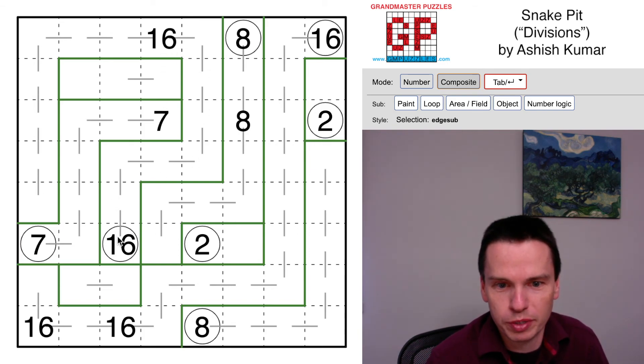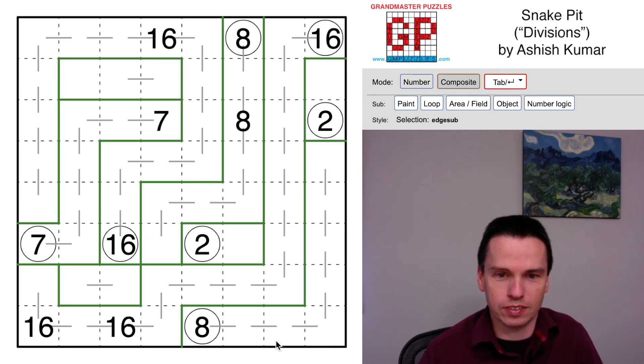And definitely some good teaching constraints about how to think of threading snakes around the grid and working alongside large clues—clues that have to avoid each other, these 16s in particular here and elsewhere in the grid that have to avoid each other. So thanks Ashish for the puzzle, thanks for watching this video, hopefully you learned something from it, and we'll see you again soon.